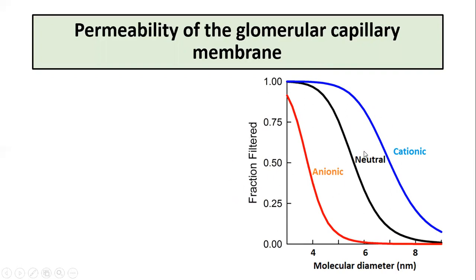Three substances are being used: anions, neutral, and cationic substances. The graph explains that any substance with a molecular size less than 4 nanometers is freely filtered. If the substance has a molecular diameter of more than 8 nanometers, it is not filtered at all — showing zero permeability.